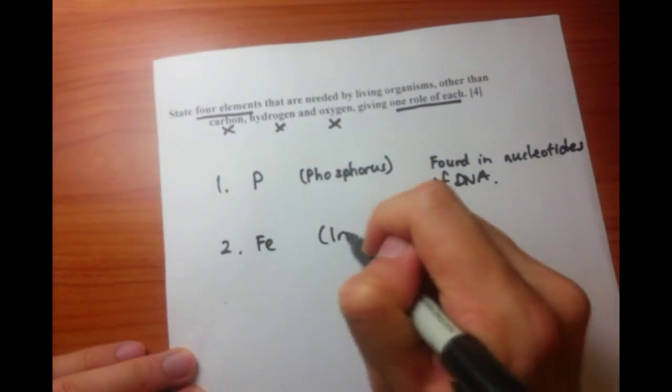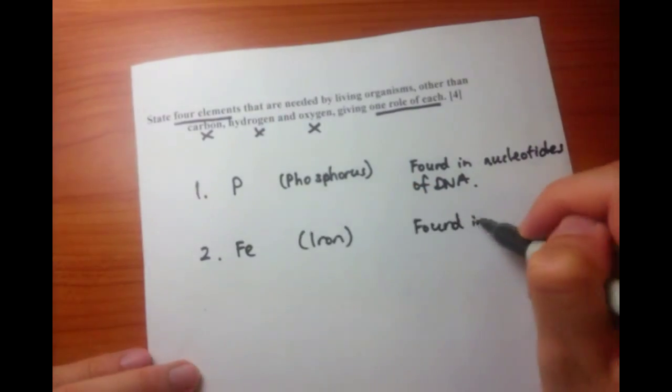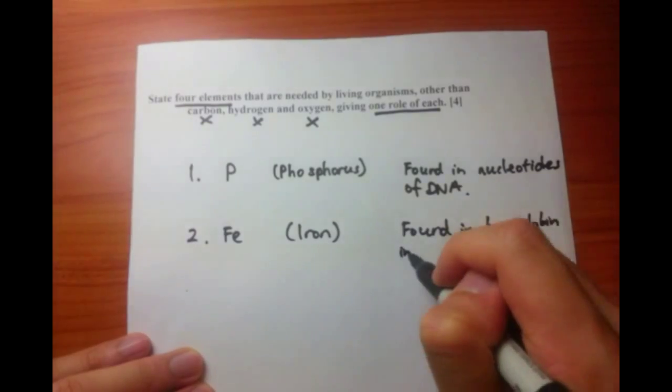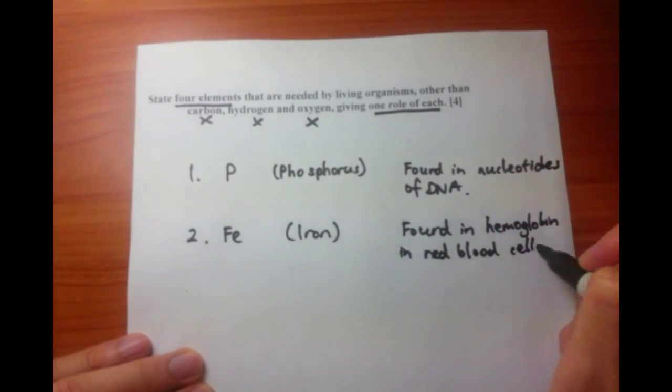Second thing we're going to mention is iron, and as you all know, iron is found in red blood cells, which is what makes them red, and this is found in the hemoglobin protein which is within the red blood cells itself.